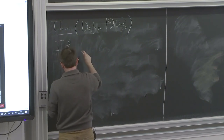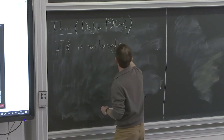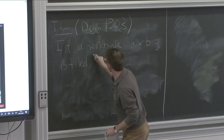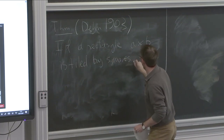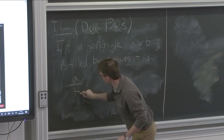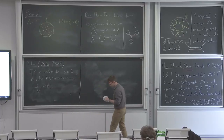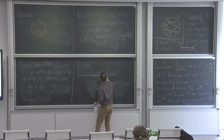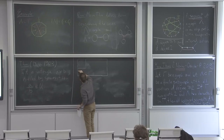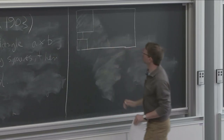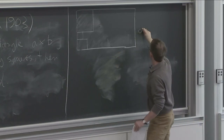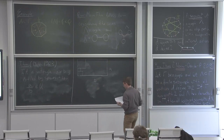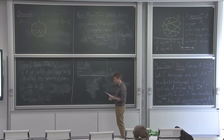Dehn's theorem says the following: if a rectangle with side lengths A and B is tiled by squares, then the proportion of A to B is a rational number. So you have a rectangle — maybe there is some large square, small square, medium square, etc. — you're tiling the rectangle by finitely many squares, and then the proportion of A to B has to be a rational number.